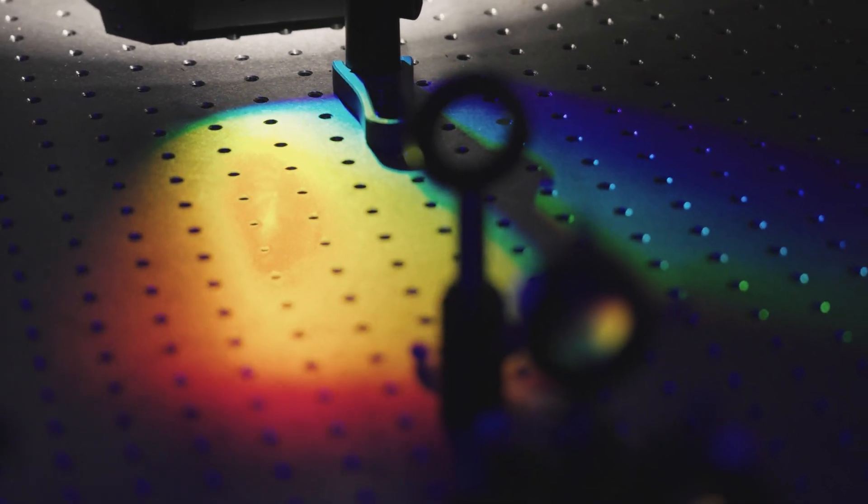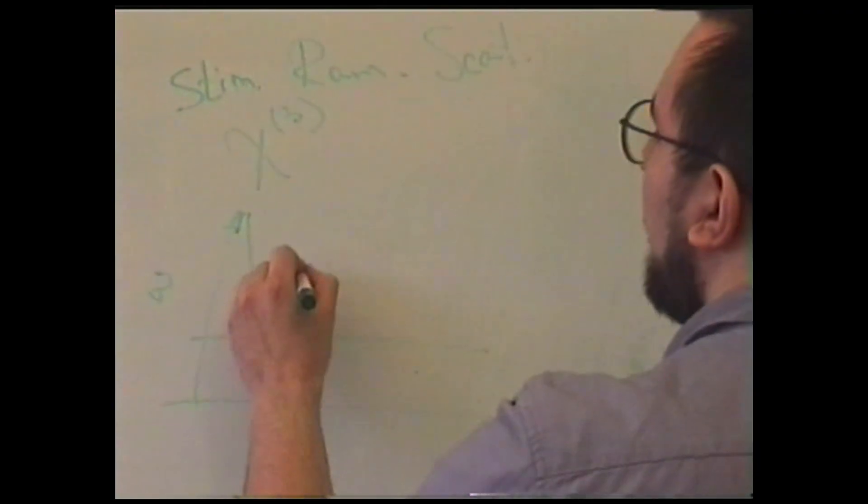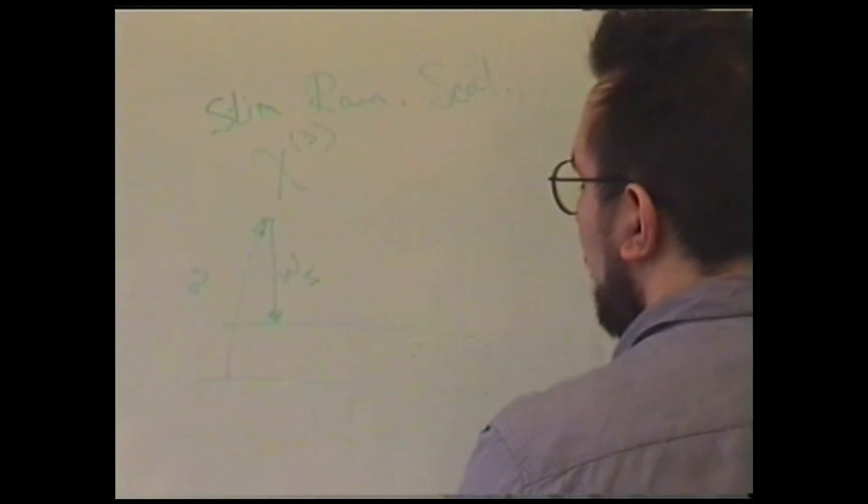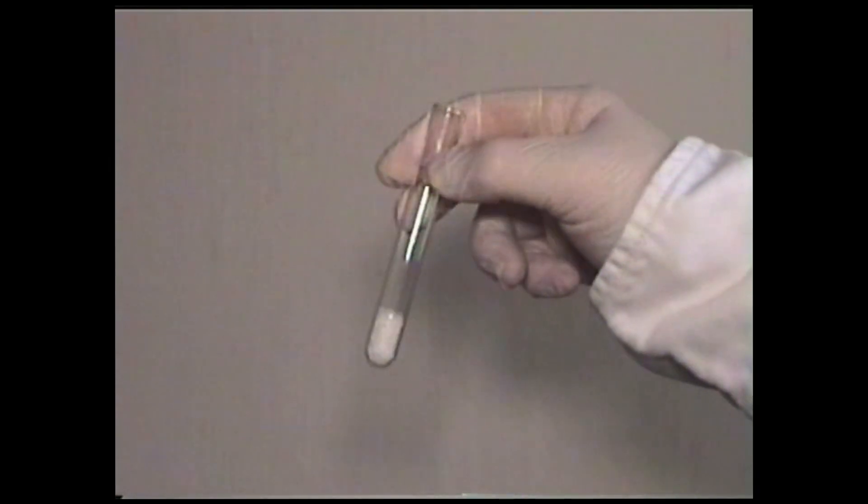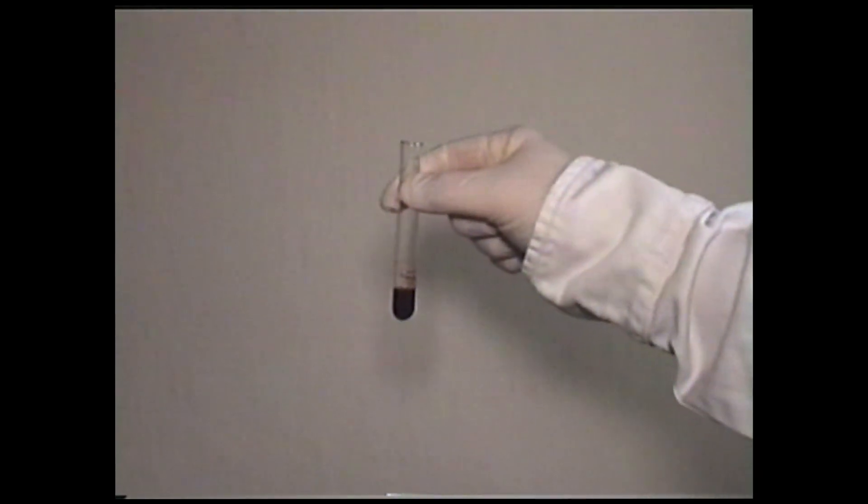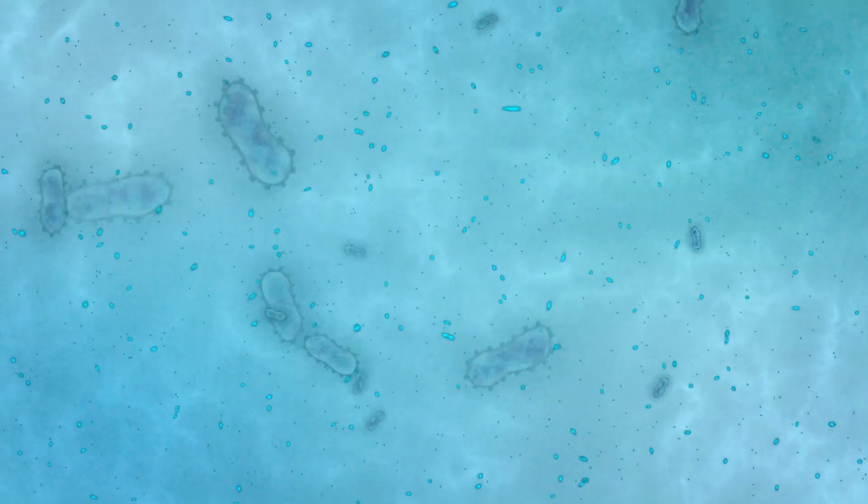But here's where light noise can be a real problem. Raman spectroscopy. A great technology to identify chemical substances and characterize various materials, including biological objects. Hey! I'm still here!